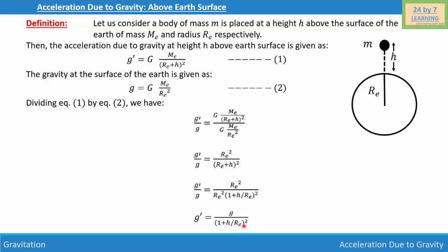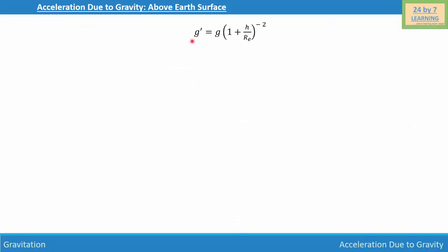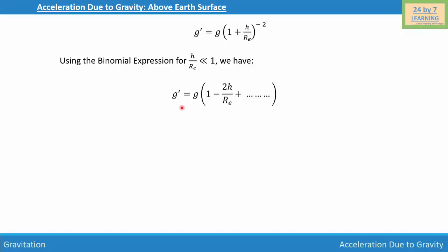Taking the denominator to the numerator, we write g' = g (1 + h/Re)^(−2). Now using the binomial expansion, and applying the condition that h/Re is very much less than 1, we expand this as g' = g [1 − 2h/Re + ...], where all higher-order terms are negligible.